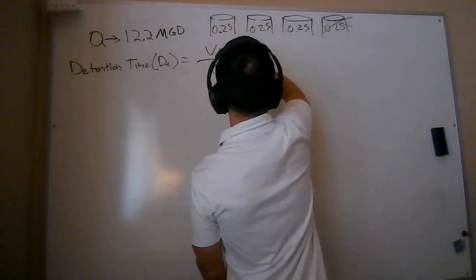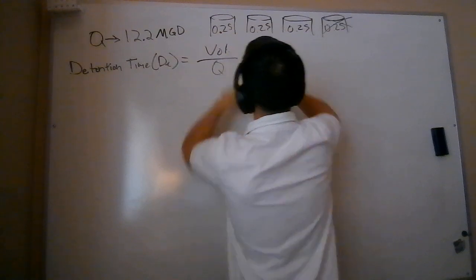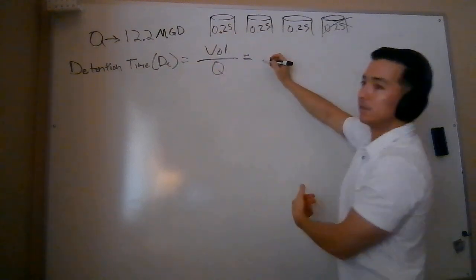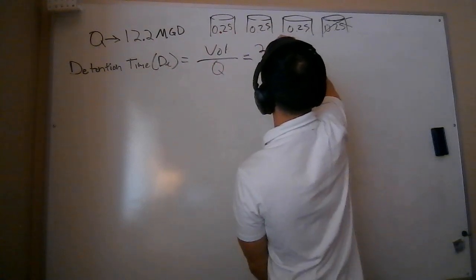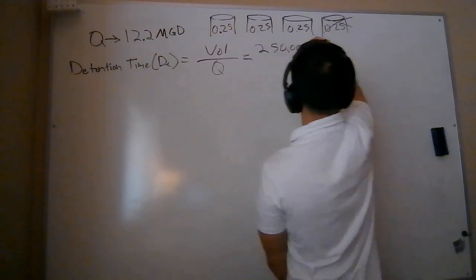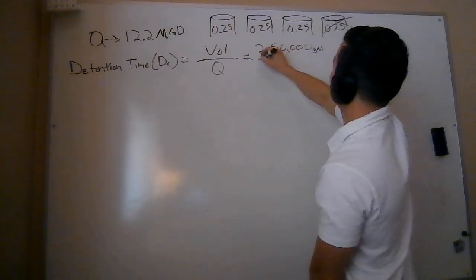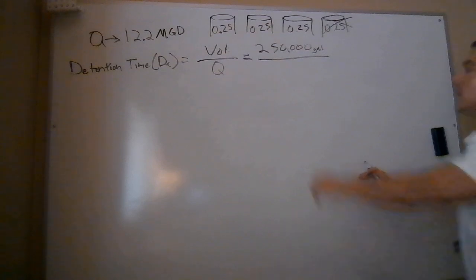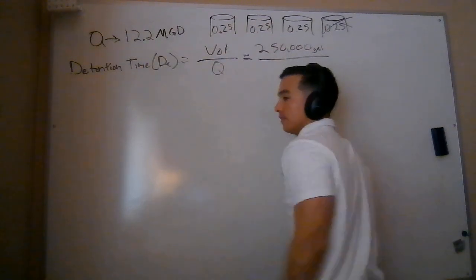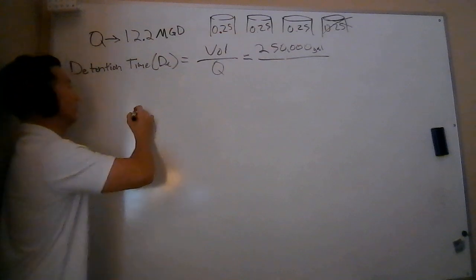So I'm going to say that my volume of one clarifier is 0.25 million gallons. Remember that that's going to look like 250,000 gallons. All right, that's my volume. And that volume is being treated by just a third of that flow.